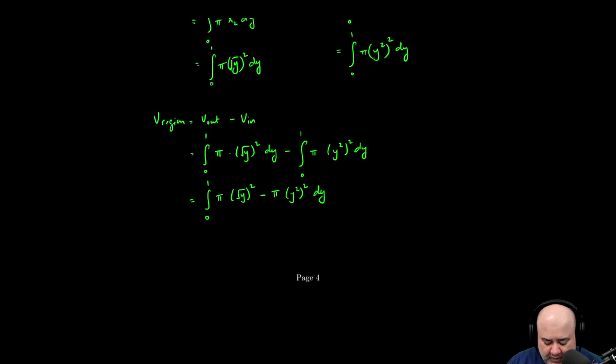We can further clean this up into zero to one of pi. We can factor a pi out because both terms have a pi in it. The root of y squared minus the square of y squared with respect to y.